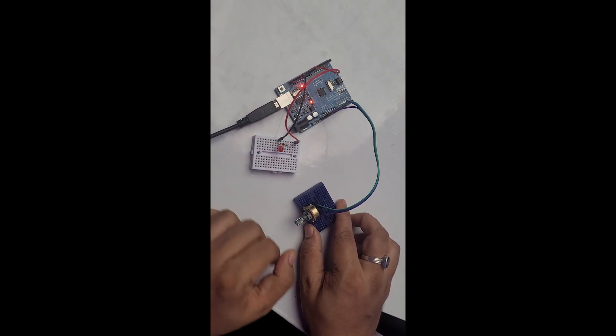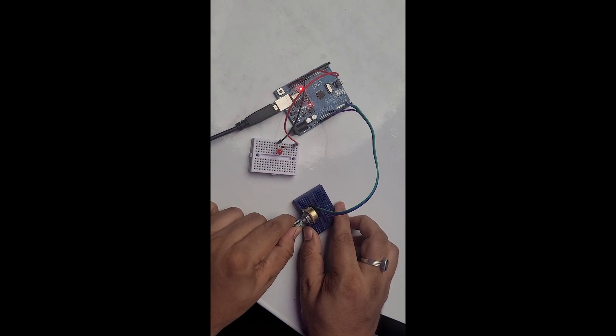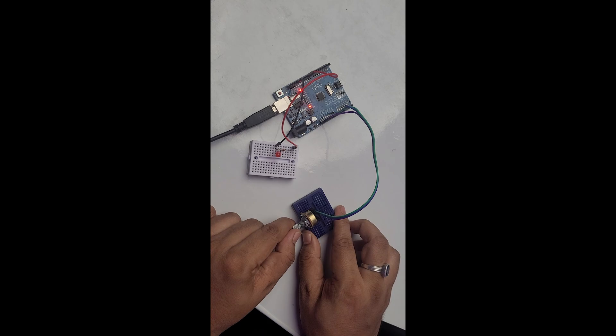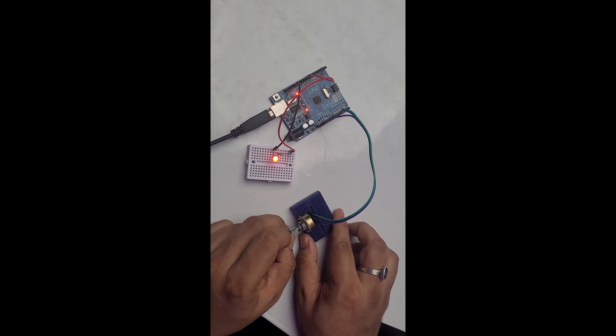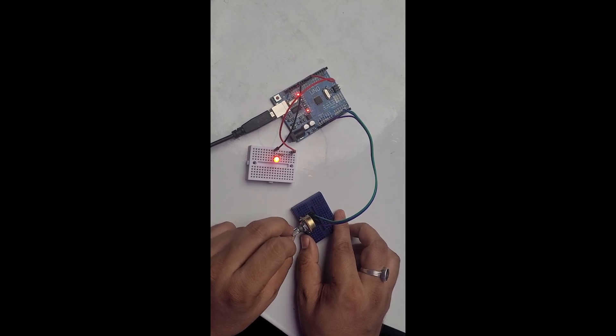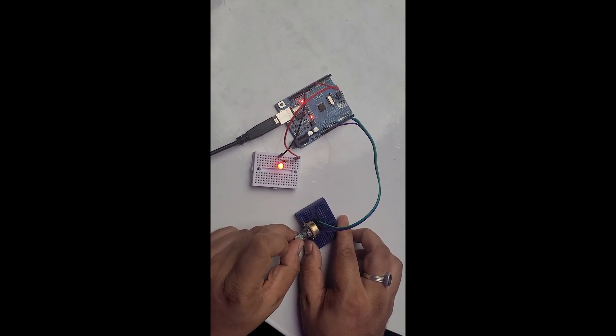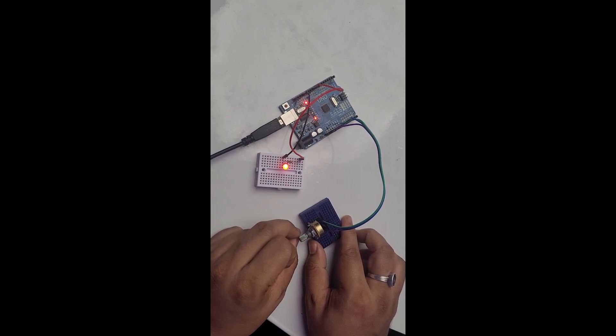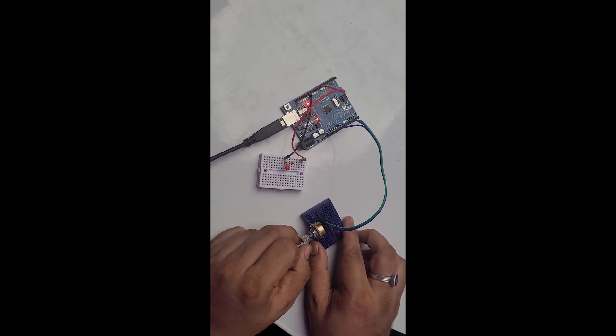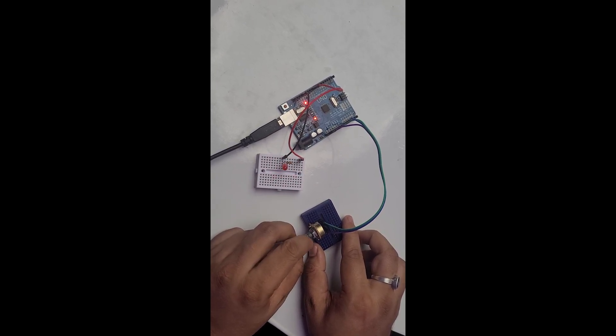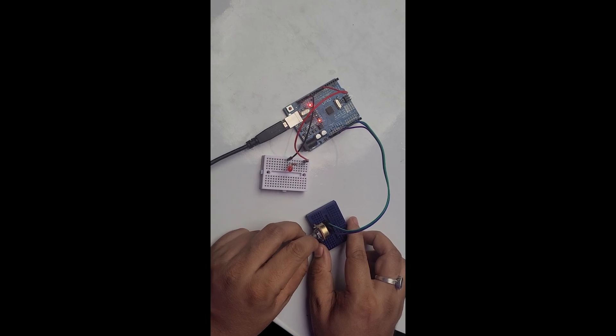So as soon as I change the value of the potentiometer, you will see the frequency of LED turning on and off will increase. So on the left-hand side, the value 0 of analog signal corresponds to 1000 milliseconds of digital delay. And as soon as I rotate the potentiometer toward clockwise and go to maximum value, which is 1023 of analog value, which corresponds to 100 milliseconds of delay in blinking speed of an LED.